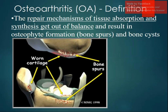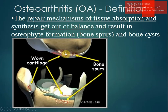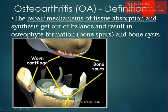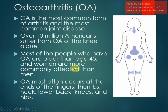Once the articular cartilage is worn out and the subchondral bone is exposed, new bone formation begins. These new bony spikes or irregularities are called osteophytes or bone spurs. When they rub against each other they cause more pain. Osteoarthritis is the most common form of arthritis and the most common joint disease.